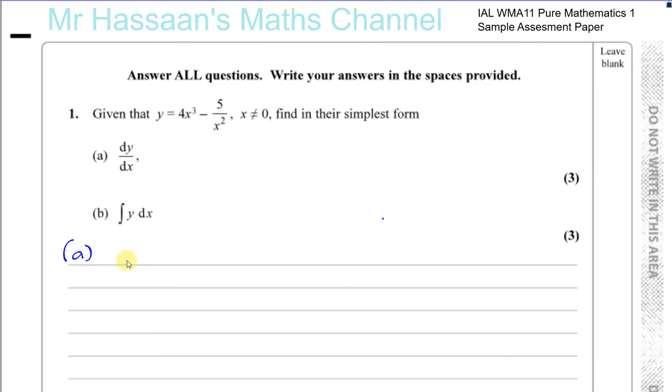So first of all, let's find dy/dx. Now before we can find dy/dx, we have to get this thing ready and prepared to be differentiated. So you have 4x cubed minus, and for something to be ready to be differentiated, the x's, the variables, should be on top. They should be on the numerator.